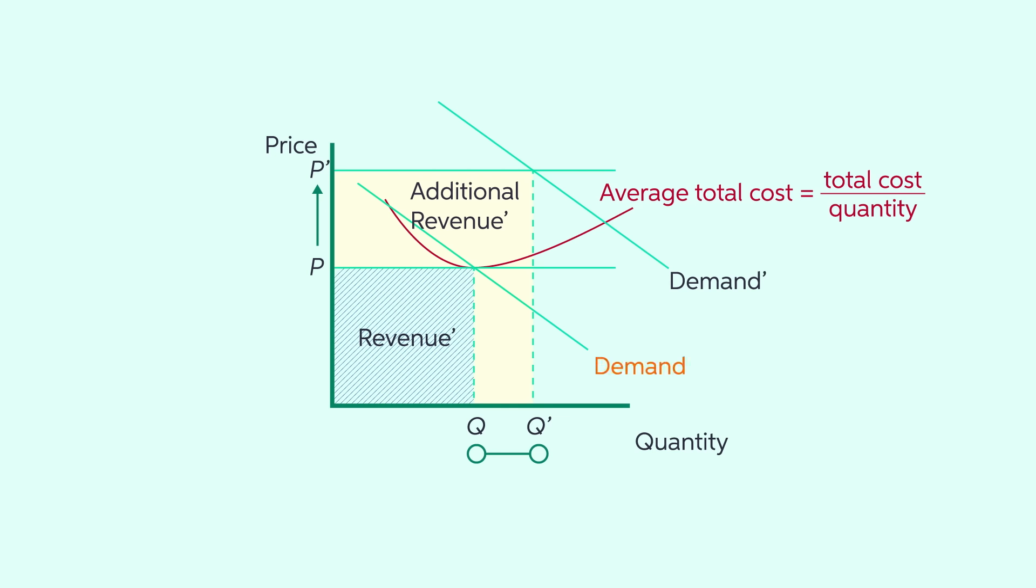The demand curve shifts from demand to demand prime, with the resulting increases in price from P to P prime and quantity Q to Q prime. And notice how the firm's revenue expands in this case.